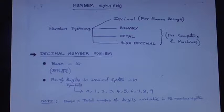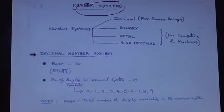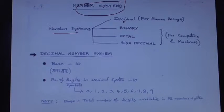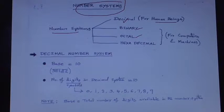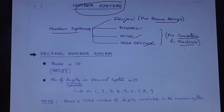In this lecture I will explain number systems used in computers. Commonly used number systems are the decimal number system for human beings, and binary, octal, and hexadecimal number systems for computers, machines, and other electronic devices.